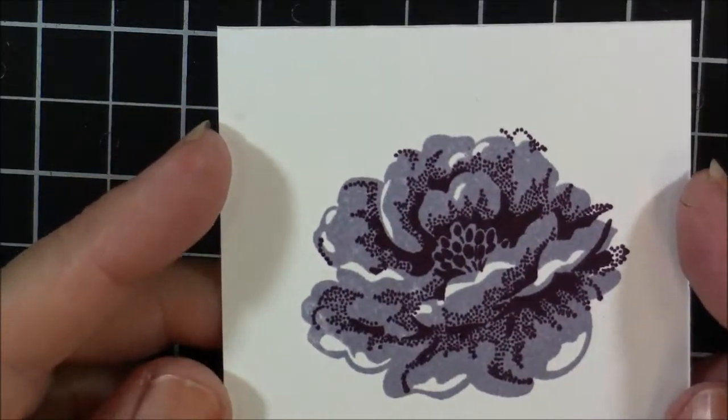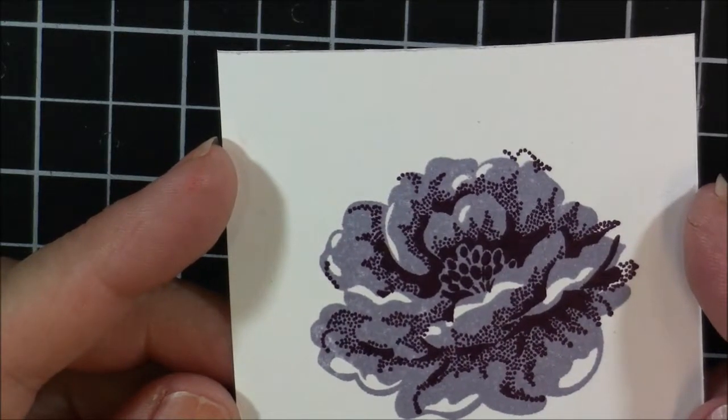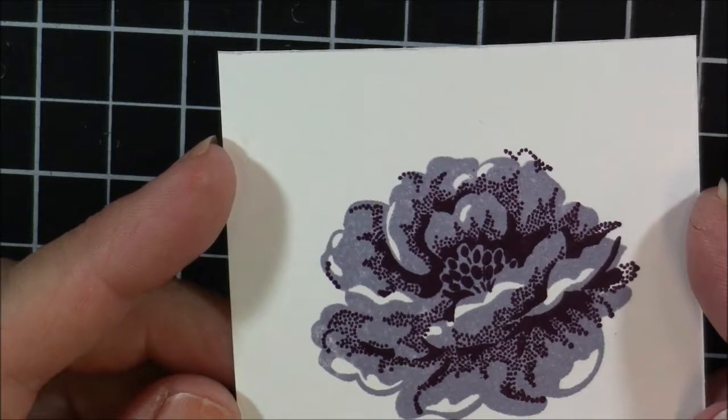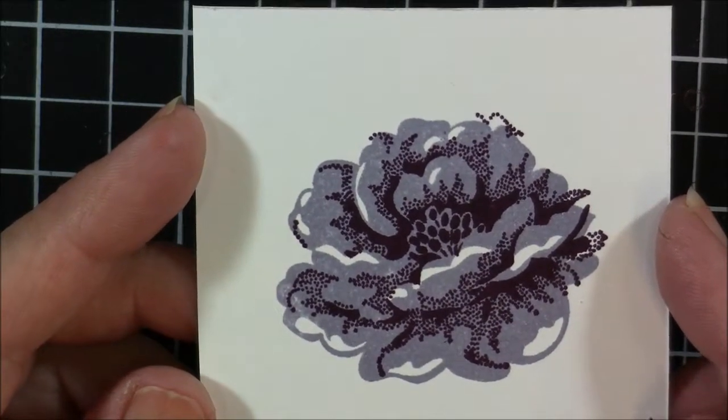Once again, that's two-step stacking and I used the Stippled Blossom stamp set with the Wisteria Wonder and Blackberry Bliss inks. Until next time, happy stamping.